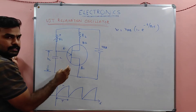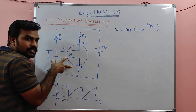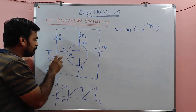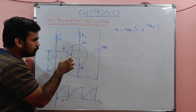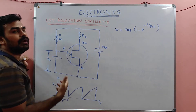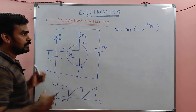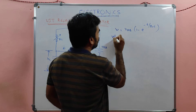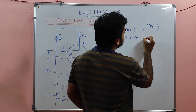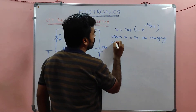At a particular point, the capacitor is charged sufficiently to trigger the emitter and B1 junction at voltage VP. If the capacitor voltage is sufficient to forward bias the emitter and B1 junction, the charging will stop. That is, when VC equals VP, the charging stops.